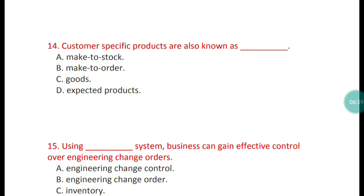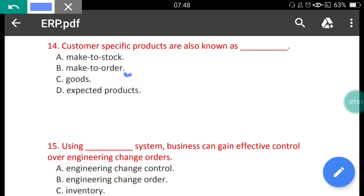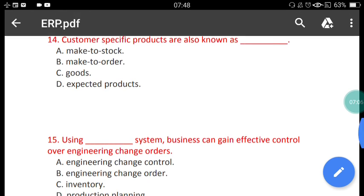Question 14: Customer-specific products are also known as what? The options are: make to stock, make to order, goods, and expected products. The correct answer is option B — customer-specific products are also known as make-to-order products.